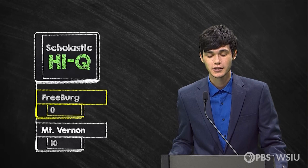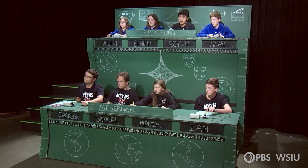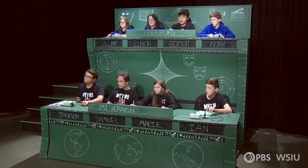Next question: What molecules, whose solubility is described in Flory-Huggins theory, can be made via a chain growth process and are made from repeated small units? Samuel buzzes in — Polymers. Polymers is correct! Well done.